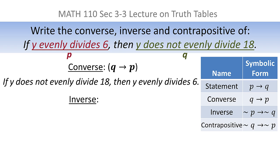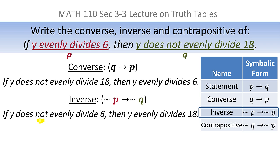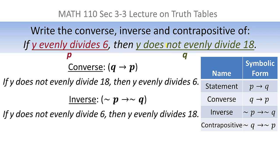To get the inverse, we negate both p and q. Since p is 'y evenly divides 6,' negating it gives 'y does not evenly divide 6.' The original q already contains a 'not,' so negating it removes the 'not,' giving 'y evenly divides 18.' So the inverse is 'if y does not evenly divide 6 then y evenly divides 18.'